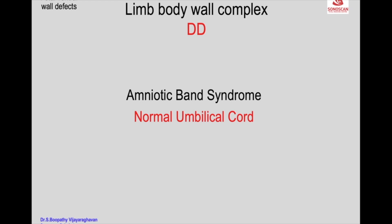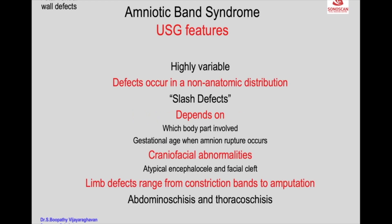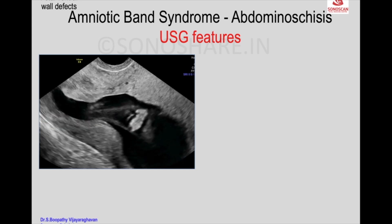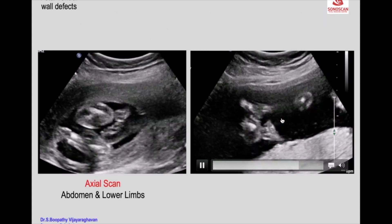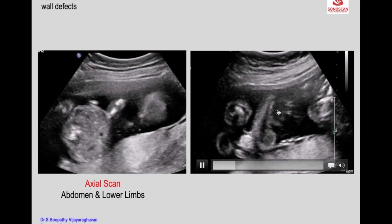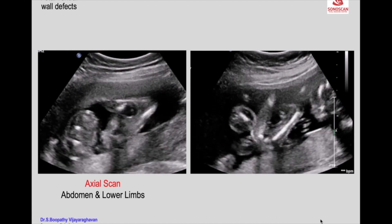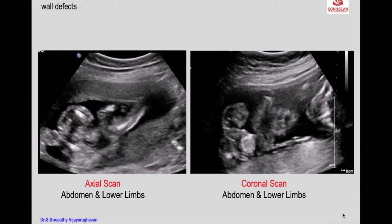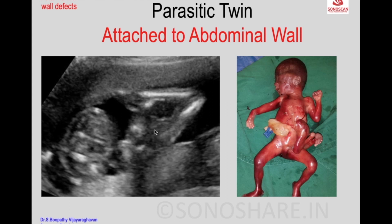The differential diagnosis includes amniotic band syndrome, thoracoschisis, and abdominoschisis when the defect involves the abdominal or thoracic wall. Here is a case where four femurs are seen — two from the fetus and two extra — attached to the abdominal wall. This is a rare condition of a parasitic twin with part of the parasitic twin attached to the abdominal wall.